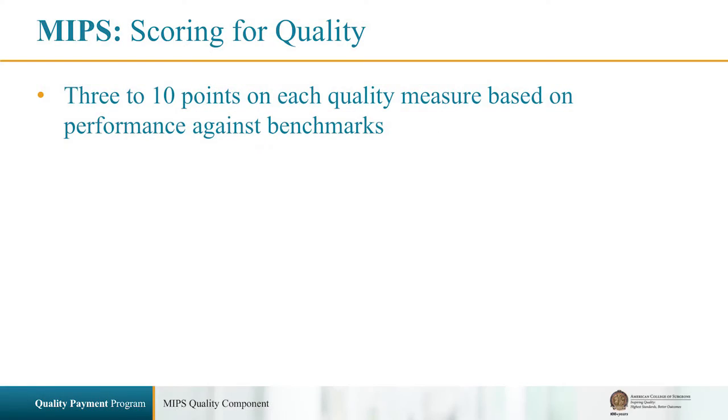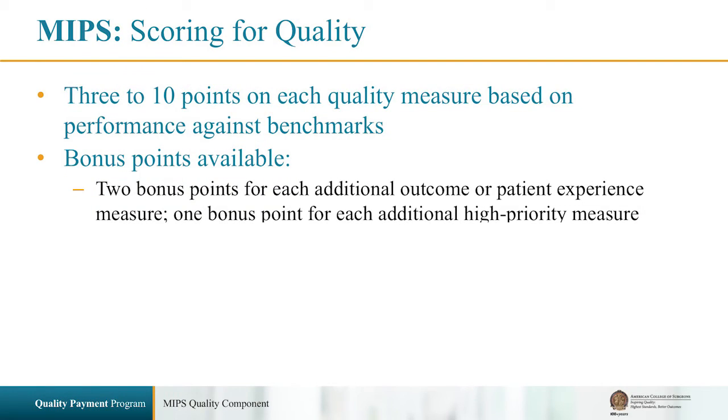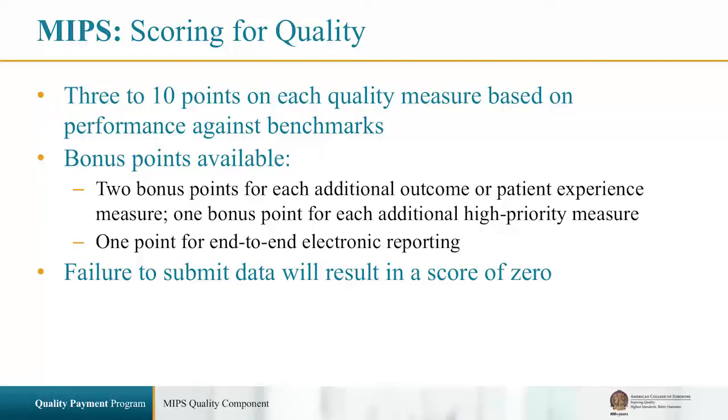Now, a little bit on how your score will be determined. CMS will give you between 3 to 10 points based on your performance compared to benchmarks. Unlike PQRS, which gave you credit for simply reporting measures, MIPS determines your score based on your performance. There is also the option to earn bonus points by reporting additional outcome or high-priority measures, as well as end-to-end electronic reporting using certified EHR technology. Bonus points are capped at 10% of the denominator. Failure to submit any data results in zero points.